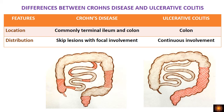Crohn's disease can involve the intestine from the mouth to the anus, including the small intestine and the large intestine. Ulcerative colitis, on the other hand, involves only the colon. In Crohn's, we have skip lesions — parts of the intestine that are involved with healthy segments in between — whereas in ulcerative colitis there is continuous involvement of the bowel.